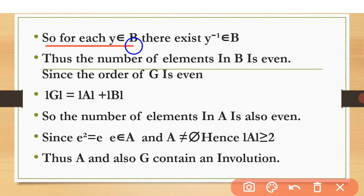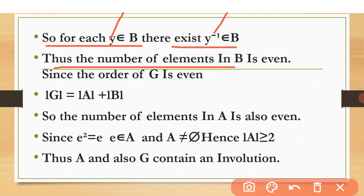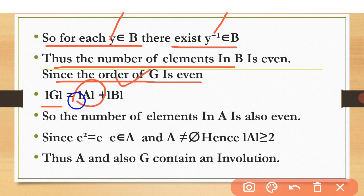For each y in B, its inverse y-inverse also belongs to B since B is a subgroup. So elements of B come in distinct pairs {y, y-inverse}, meaning the number of elements in B is even. Since the order of G is 2n (even) and |B| is even, it follows that the order of A is also even.